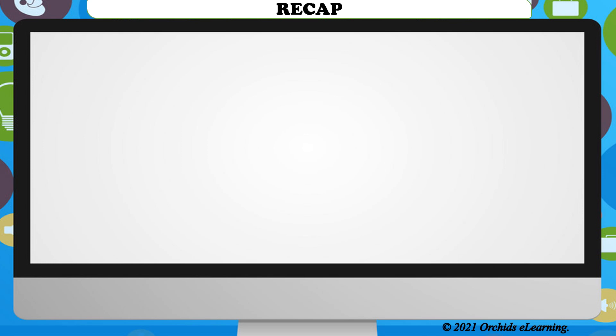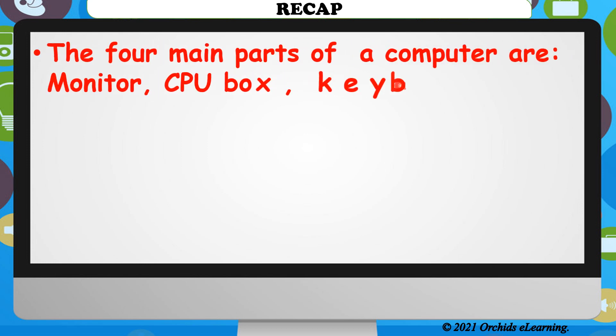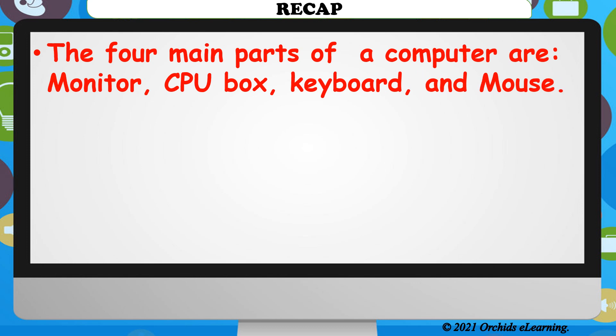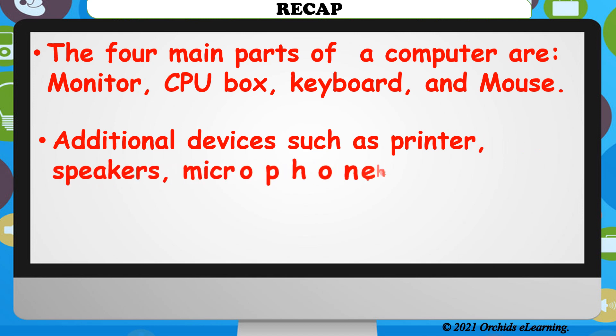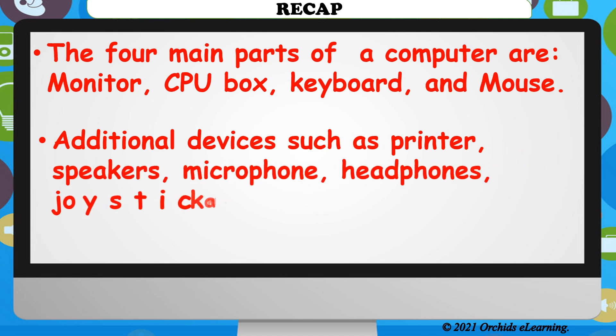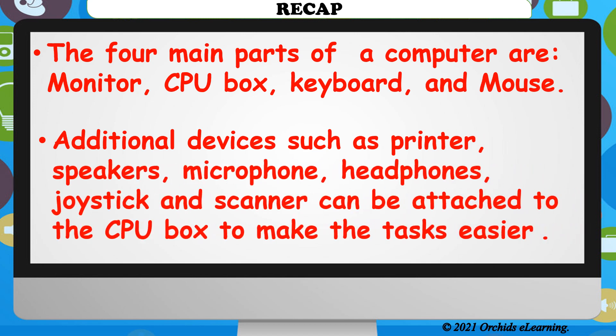Recap: The four main parts of a computer are monitor, CPU box, keyboard, and mouse. Additional devices such as printers, speakers, microphones, headphones, joystick, and scanners can be attached to the CPU box to make tasks easier and faster.